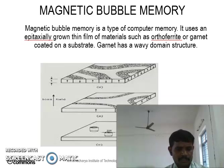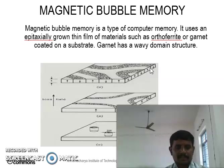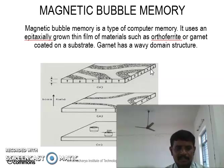Now we are going to discuss the magnetic bubble memory. Magnetic bubbles are soft magnetic materials. Magnetic domains with a few micrometers in diameter are embedded in a matrix with different orientations.